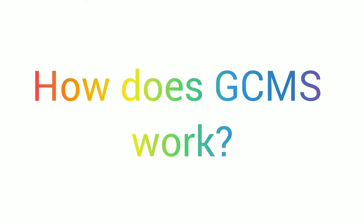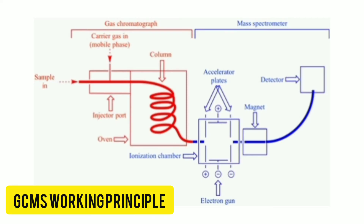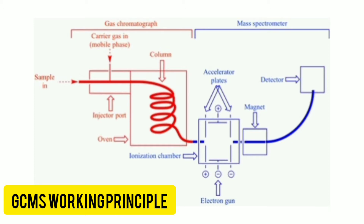How does GC-MS work? Samples are introduced into the GC through a heated injector. The sample gets vaporized at a high temperature. Different compounds are separated when they pass through a column depending on their molecular mass and polarity. The separated compounds sequentially enter the MS via a heat transfer region.